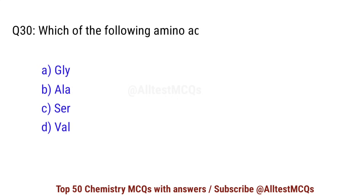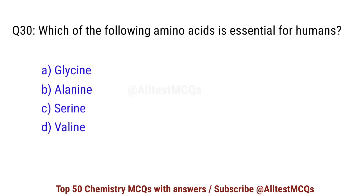Question number 30. Which of the following amino acids is essential for humans? Right option is D: valine.